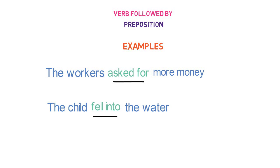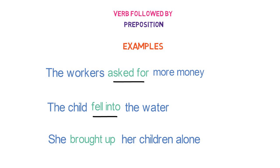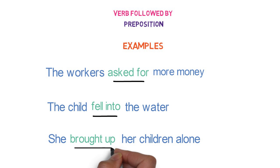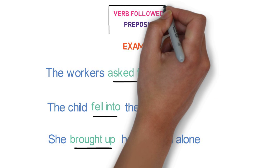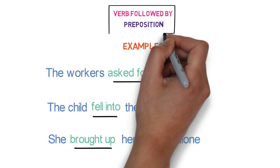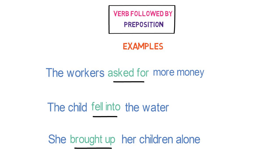And the whole group of words 'fell into' is the phrasal verb containing preposition. Let's look into the last example of phrasal verb containing preposition. 'She brought up her children alone.' Here, 'brought' is the verb and 'up' is the preposition, and the whole group of words 'brought up' is a phrasal verb containing preposition. All these are the examples of phrasal verbs having preposition.